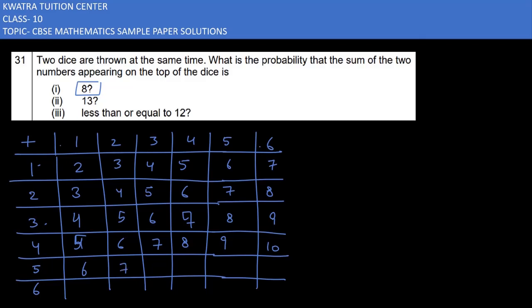4 and 6 is 10. 5 and 1 will be 6, 5 and 2 will be 7, 5 and 3 is 8, 5 and 4 is 9, 5 and 5 is 10, 5 and 6 is 11. Then 6 and 1 will be 7, 6 and 2 will be 8, 6 and 3 will be 9, 6 and 4 will be 10, 6 and 5 will be 11, and 6 and 6 will be 12.